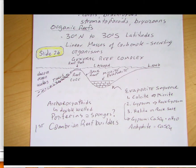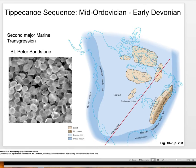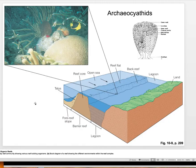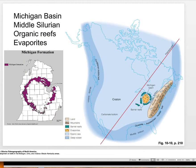Once we get to the Tippecanoe Sea, stromatoporoids were a key reef builder. Here is the St. Peter Sandstone exposed at Governor Dodge State Park in Wisconsin — a very clean quartz sandstone. The Michigan Basin is famous for these evaporites and organic reefs. Pretty much the whole Upper Peninsula of Michigan has a huge organic reef, with the flat reef top, open ocean beyond, and in the middle the evaporites — calcite, gypsum, anhydrite, and halite forming in the lagoon. It was right near the equator when this was forming.